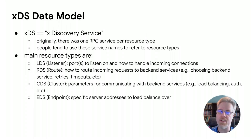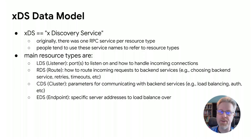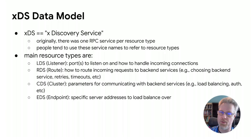The XDS data model is basically a set of configuration resources. Originally, there was a separate RPC service for each resource type. The service names were of the form X Discovery Service, where X indicated the resource type — for example, Listener Discovery Service, or LDS. In gRPC, we use a newer variant called ADS, or the Aggregated Discovery Service, which provides all resource types in one service. The four main resource types in XDS are LDS for Listener Resources, RDS for Route Config Resources, CDS for Cluster Resources, and EDS for Endpoint Resources.